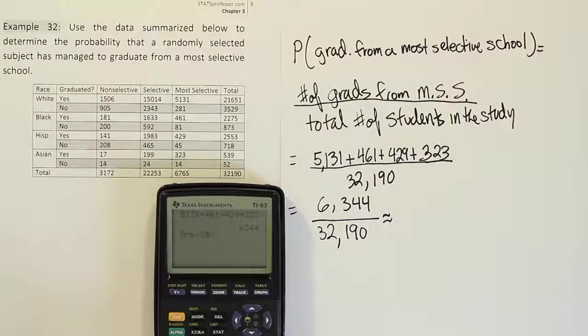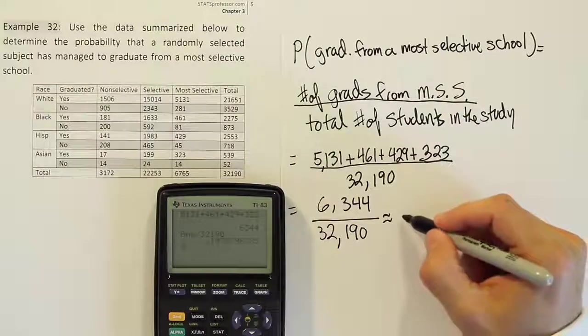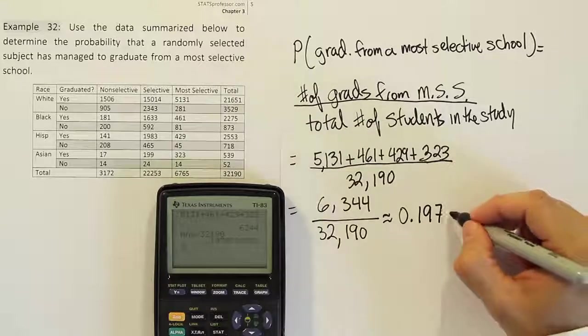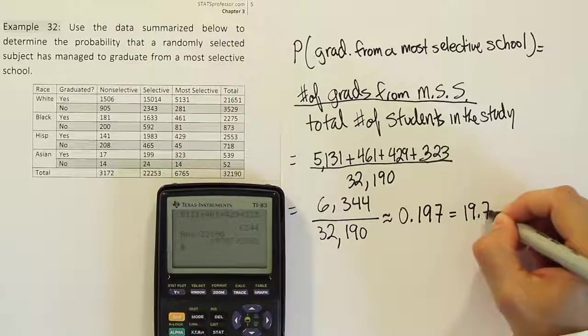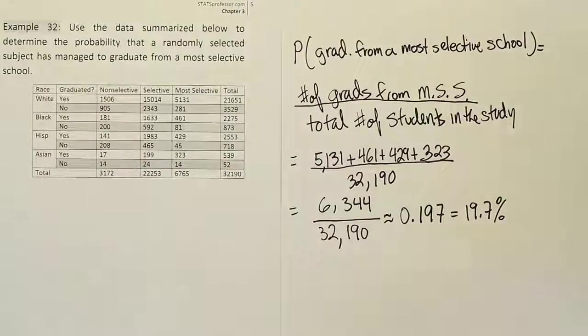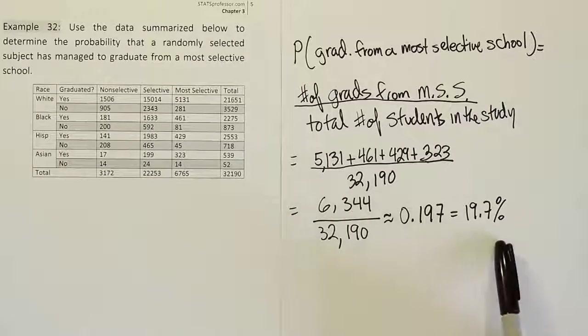So divide by 32,190. And it gives us the answer of approximately 0.197. So basically that's the same as 19.7%. So about 19.7% of the students in this study actually attended and graduated a most selective school.